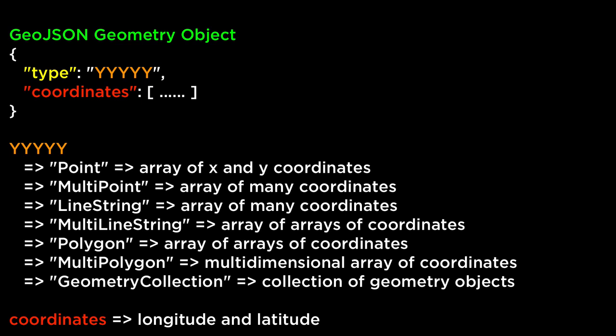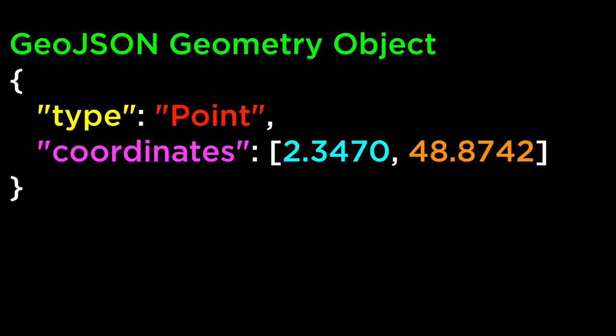GeoJSON Geometry Object. A GeoJSON geometry object has two key-value pairs. The first is the type and the type of geometry object it represents. The second is the coordinates — an array or arrays of arrays of XY coordinates. The coordinates are longitude and latitude coordinates, and the longitude is always listed first. From the earlier example, the type is a point. The value for the key coordinates is an array of two points: 2.3470, which is the longitude of Paris, France, and 48.8742, which is the latitude of Paris, France.